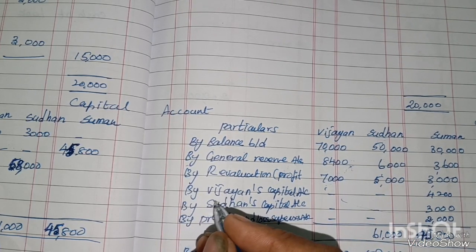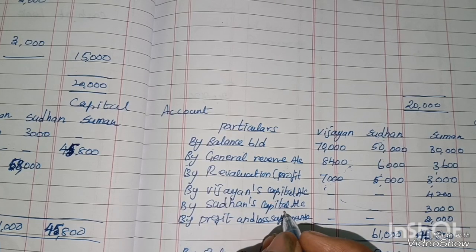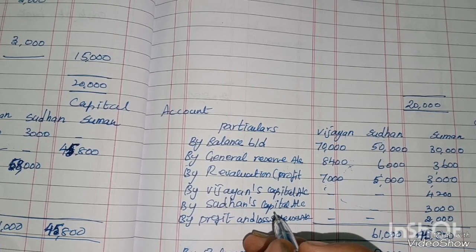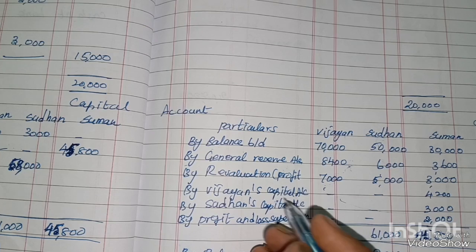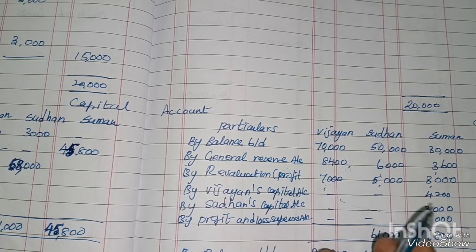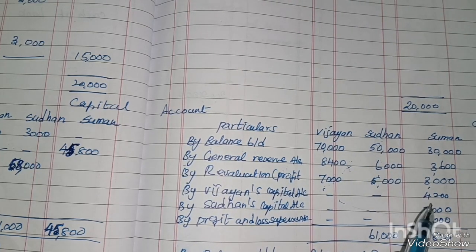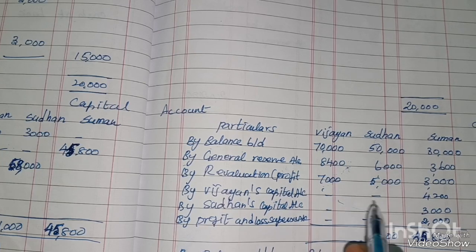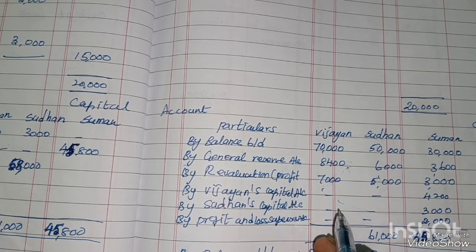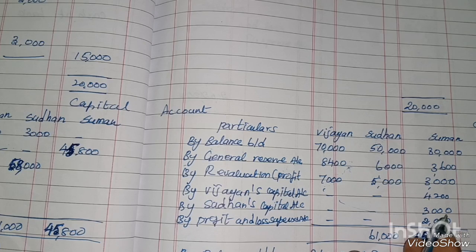By Vijayan capital account and Sudhan capital account for goodwill. Suman's goodwill share is divided between the two remaining partners in gaining ratio. Vijayan capital gets 4,200 and Sudhan capital gets 3,000.